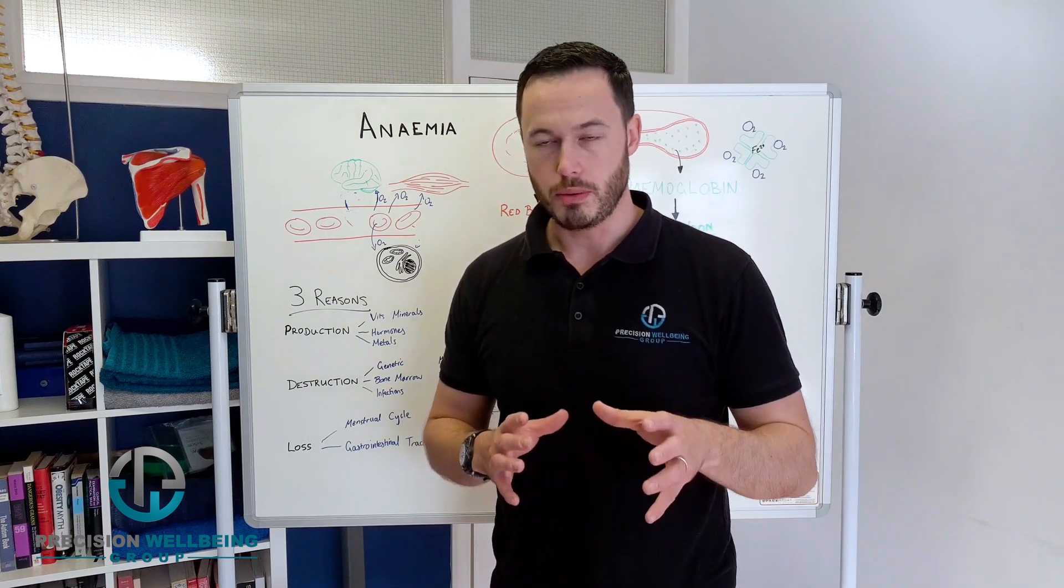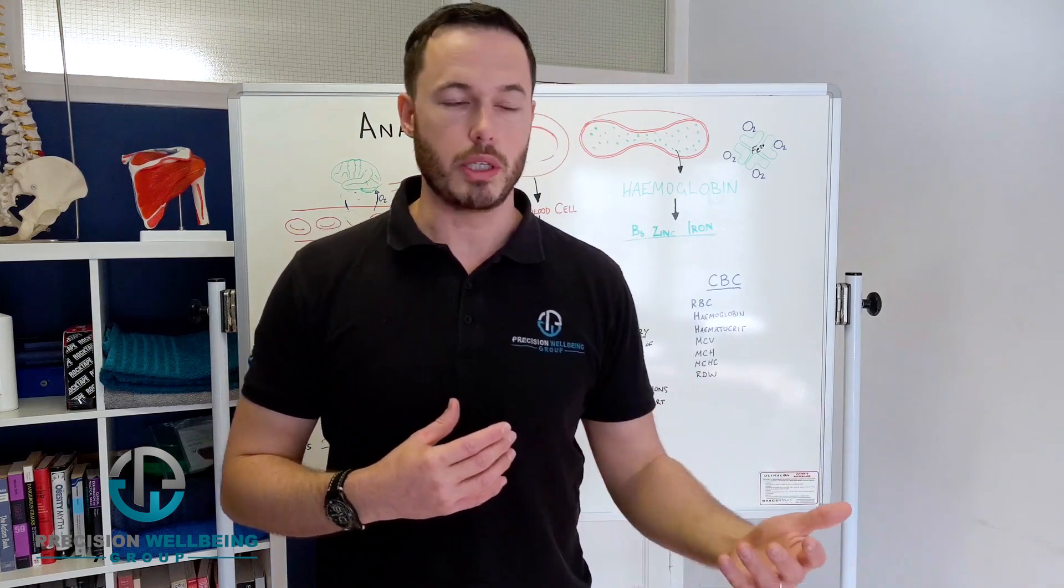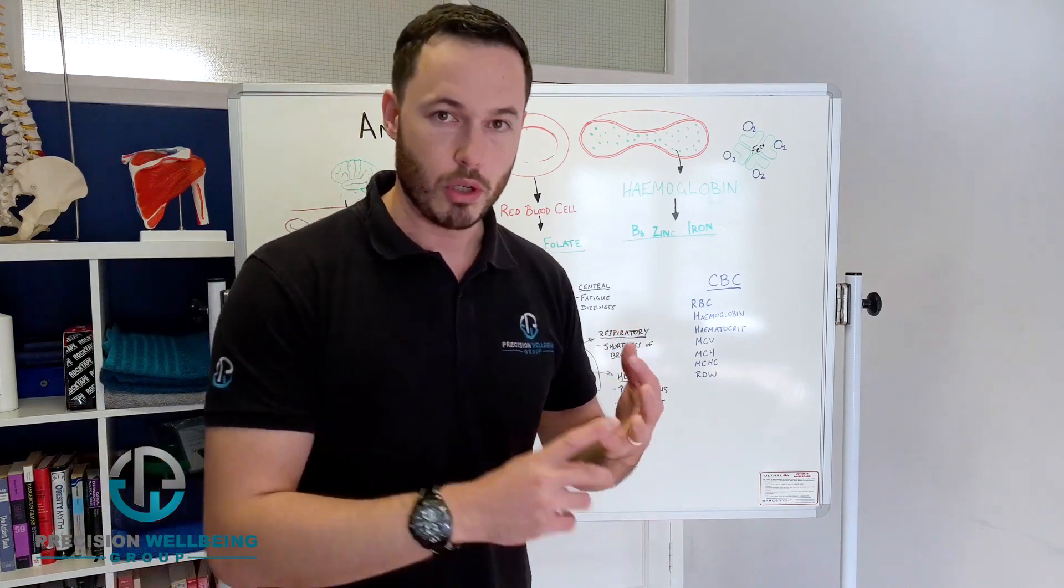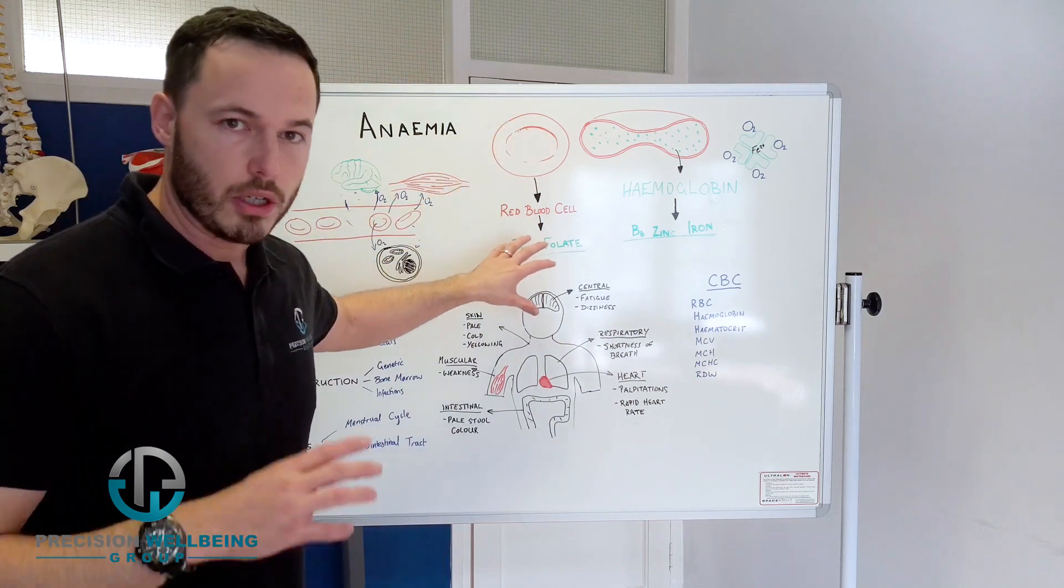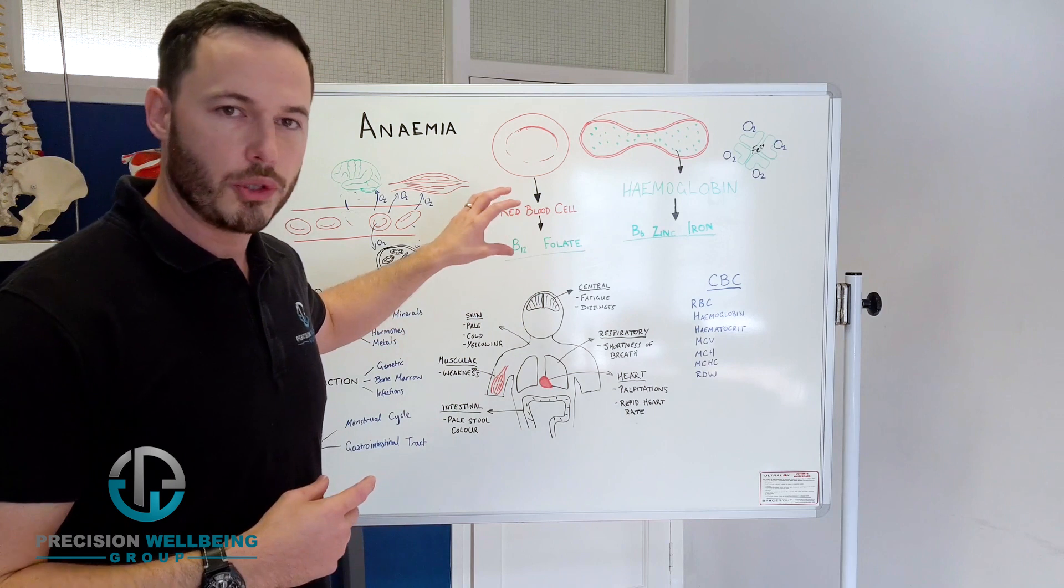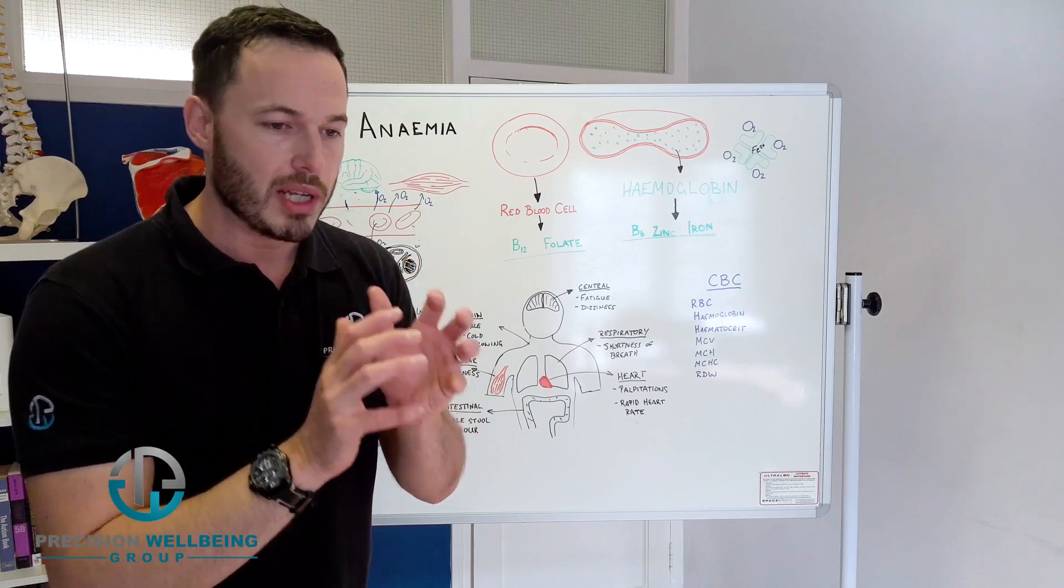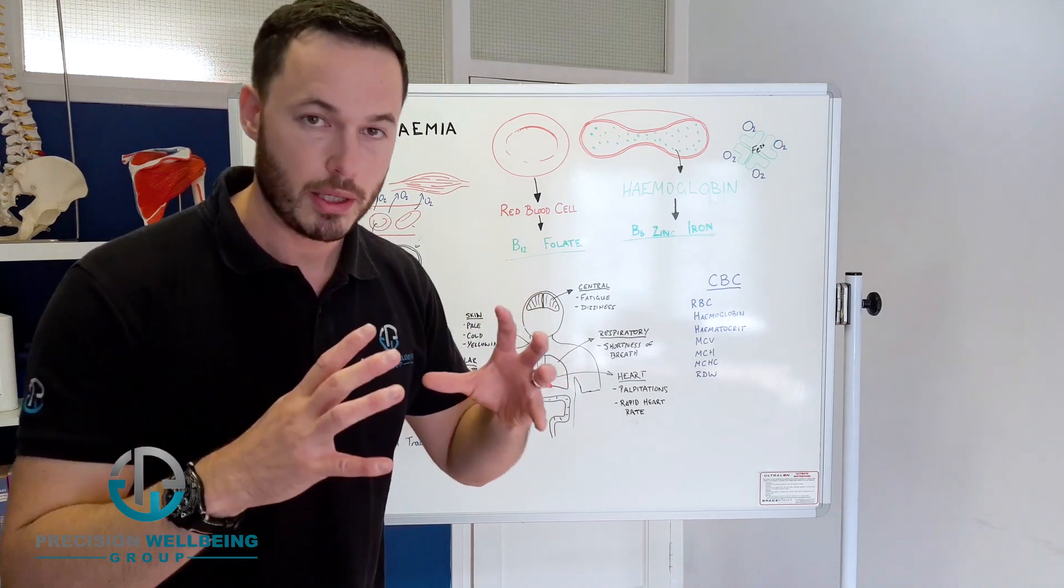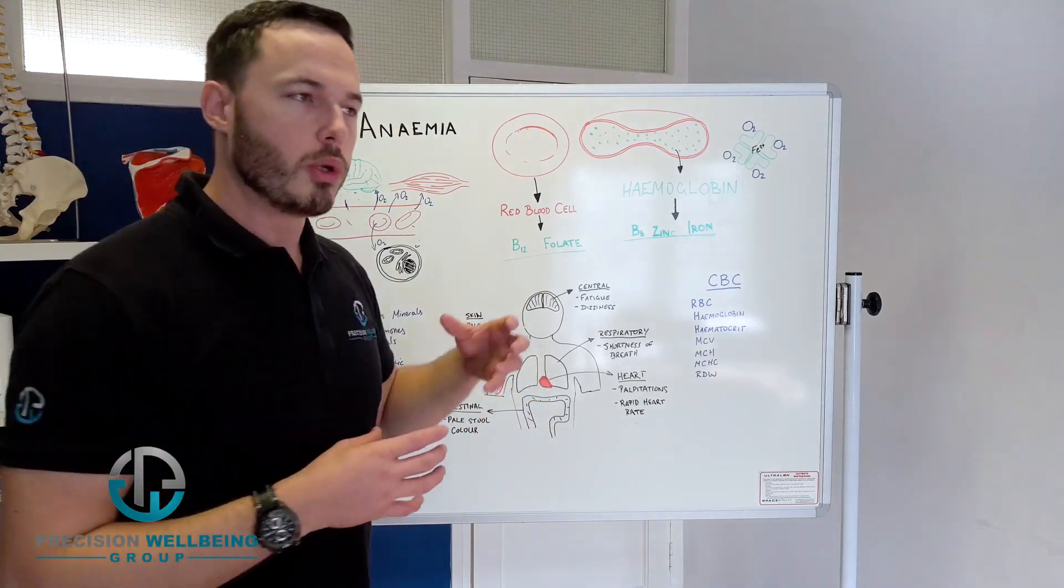Let's start with production. We need to produce a certain amount of red blood cells in order to have enough to go around the body and deliver oxygen around the body. In order to produce red blood cells and hemoglobin, we need both. In order to produce a red blood cell, we need enough B12 and folate. If you don't have one of these or both of these or enough of them, you will not be producing blood cells normally. What I mean by that is that the blood cells might end up becoming too big.